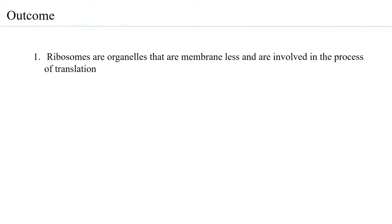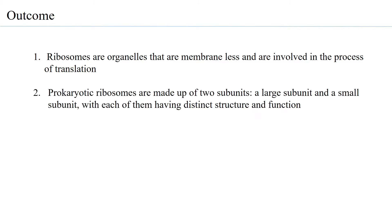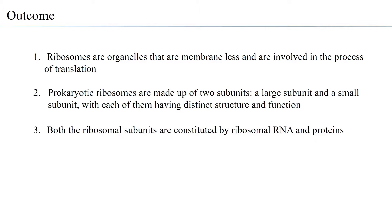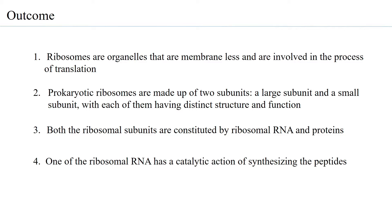Let us look at the learning outcomes of this session. Ribosomes are organelles that are membraneless — they have no membranes — and yet are involved in one of the most important aspects of bacteria, that is protein synthesis. Prokaryotic ribosomes are made up of two subunits, a large subunit and a small subunit, each with distinct structure and function. Both subunits are constituted by ribosomal RNA and proteins, and one of the ribosomal RNAs has a catalytic action of synthesizing peptides.